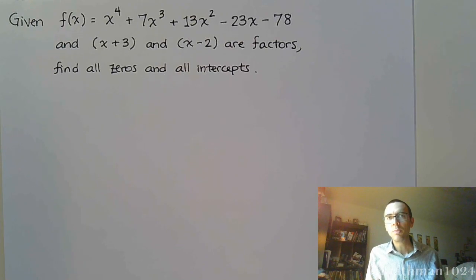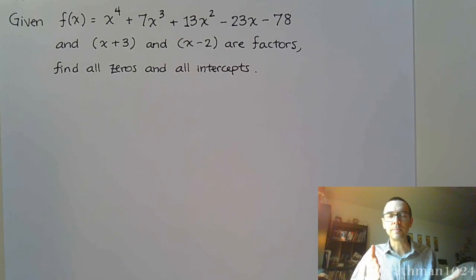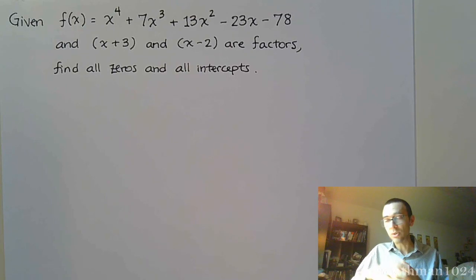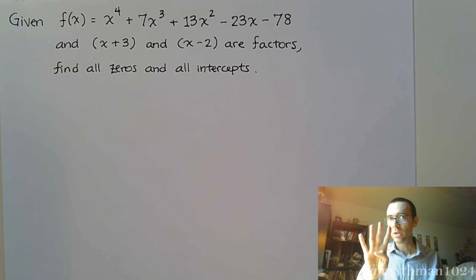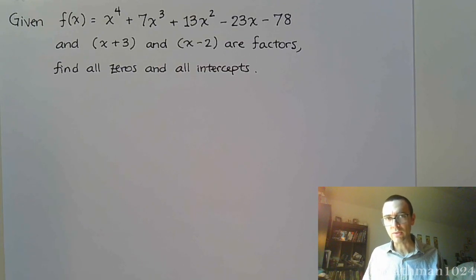And any time we can get down to a degree of 2, we're in good shape. Because if we can get down to a degree of 2, that means it's quadratic. And we spent an entire week earlier this semester solving quadratic equations. So we're going to go from a degree of 4, use one factor, use another factor, and you're going to be left with something that is quadratic.